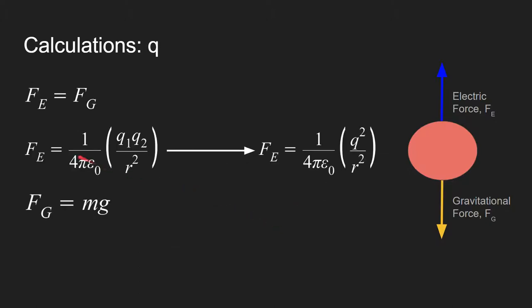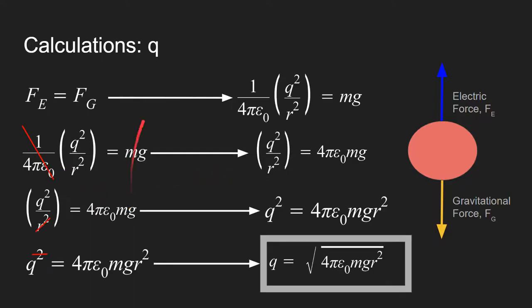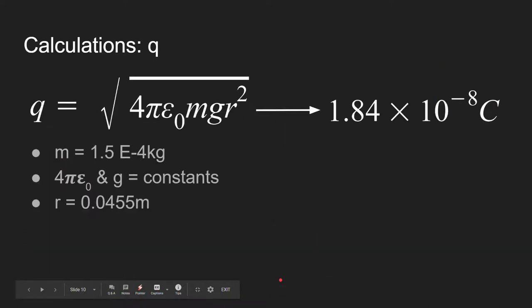Here are the equations for electric force and gravitational force. If you set these equal, you get this expression. You can move Coulomb's constant over as well as r squared and take the square root to get an expression for Q. Plugging in values gives you 1.84 times 10 to the negative 8th coulombs for the charge on one piece of tape.